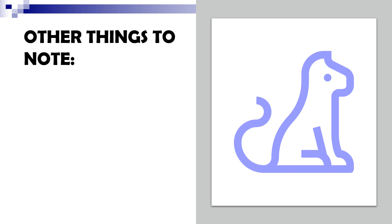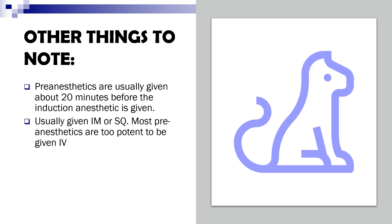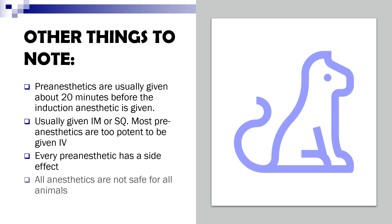Here are some important things to note when using pre-anesthetic agents. Pre-anesthetics are usually given about 20 minutes before the induction agent is given. They are usually administered intramuscularly or subcutaneously, as most pre-anesthetics are too potent to be given via the IV route. Every pre-anesthetic has a side effect, just like any drug. Not all anesthetics are safe for all animals — certain species are more sensitive to a particular group of pre-anesthetic agents — so we must be careful in choosing the agent administered to a particular animal.